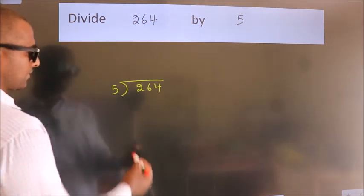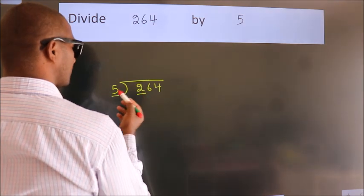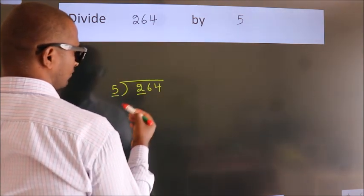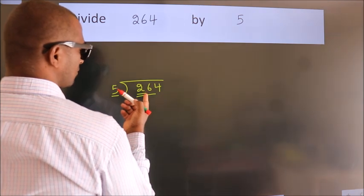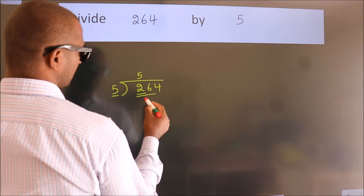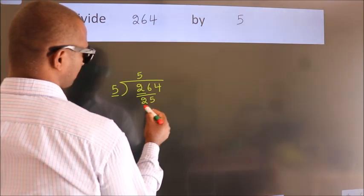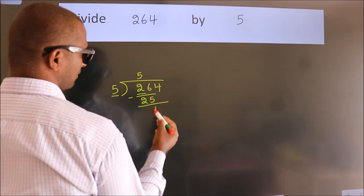Next, here we have 2, here 5. 2 is smaller than 5, so we should take 2 numbers: 26. A number close to 26 in the 5 table is 5 fives, 25. Now we should subtract. We get 1.